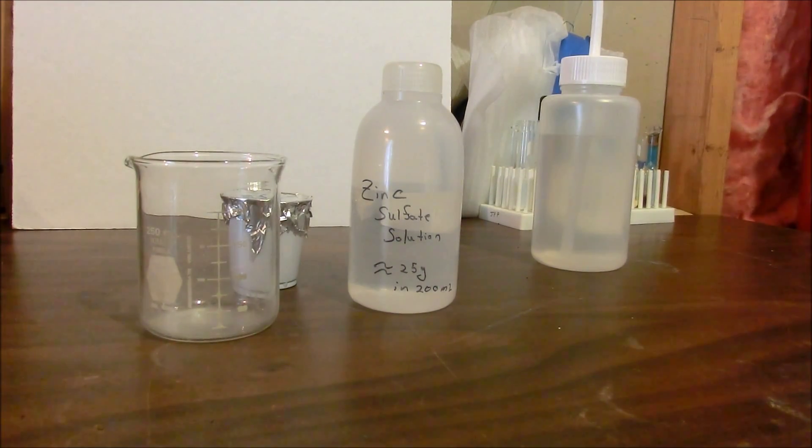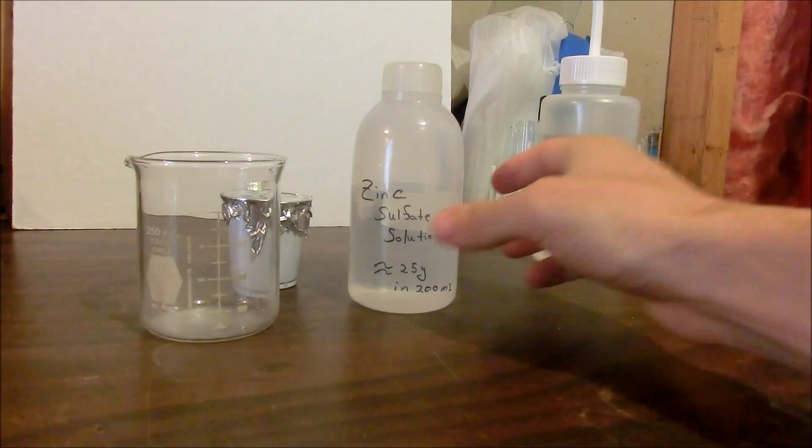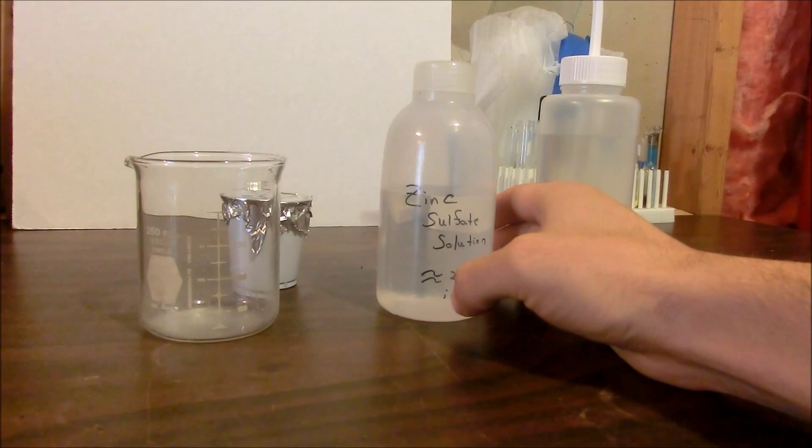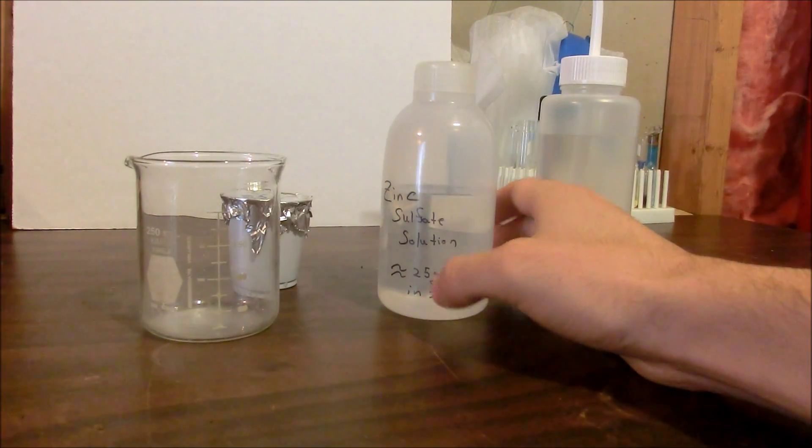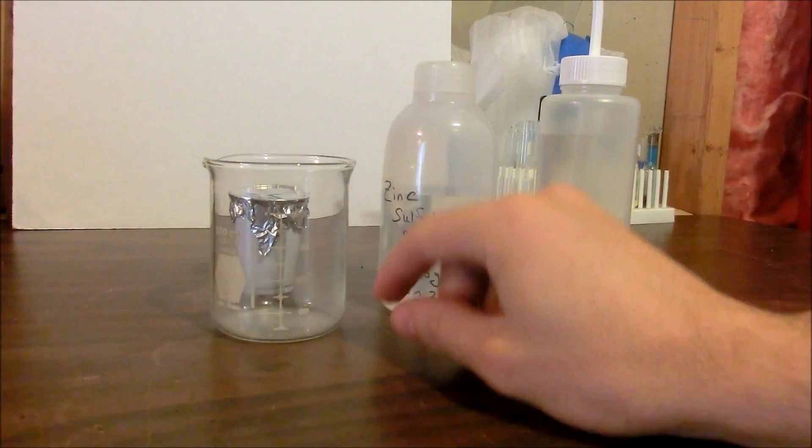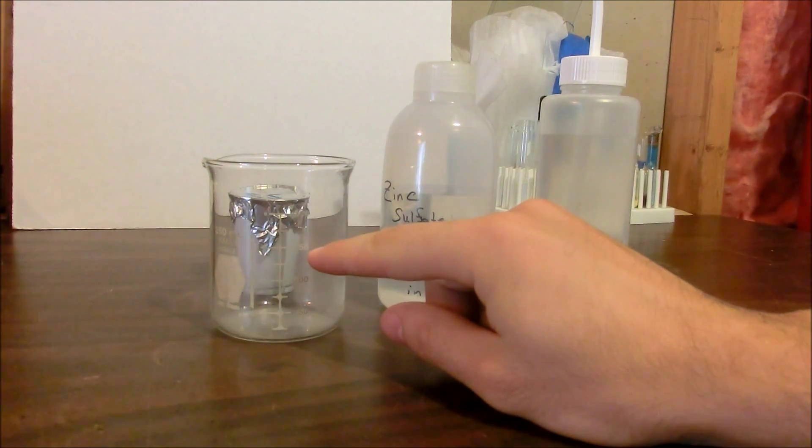The next step in our synthesis requires us to precipitate zinc sulfide from our zinc sulfate solution. So what I'm going to do is pour out about 100 milliliters of this sulfate solution to this beaker and then adjust the volume to 150 milliliters.